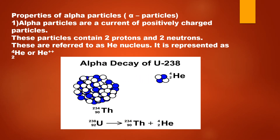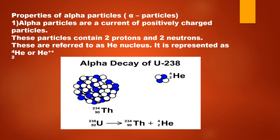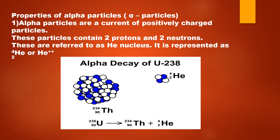We have already studied in the last part of the video that radioactive radiations are of three major types: alpha radiations, beta radiations, and gamma radiations. Alpha radiations and beta radiations are one or more particles that are released from the nuclei of radioactive substances. Whereas gamma radiations are not particles — these are high energy electromagnetic radiations. Now we will be studying the properties of alpha rays, beta rays, and gamma rays in detail.